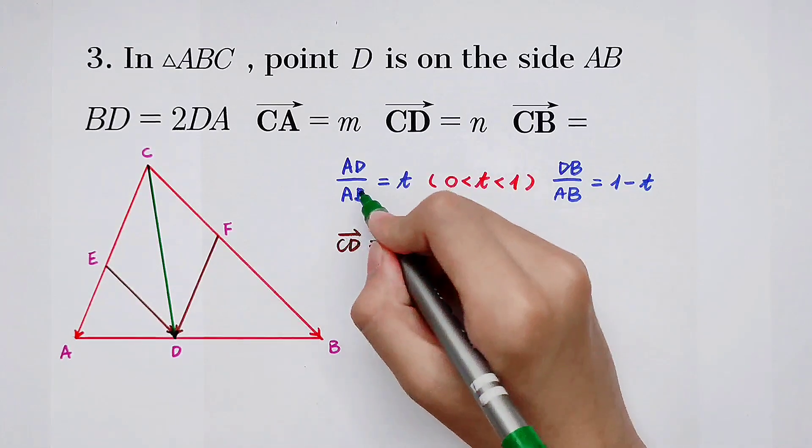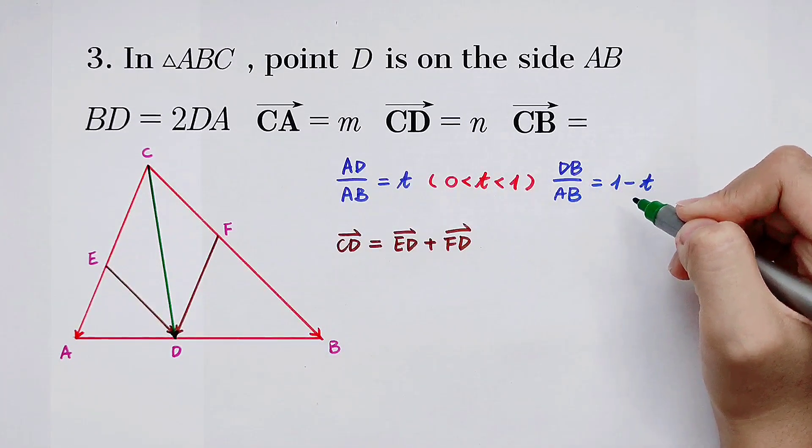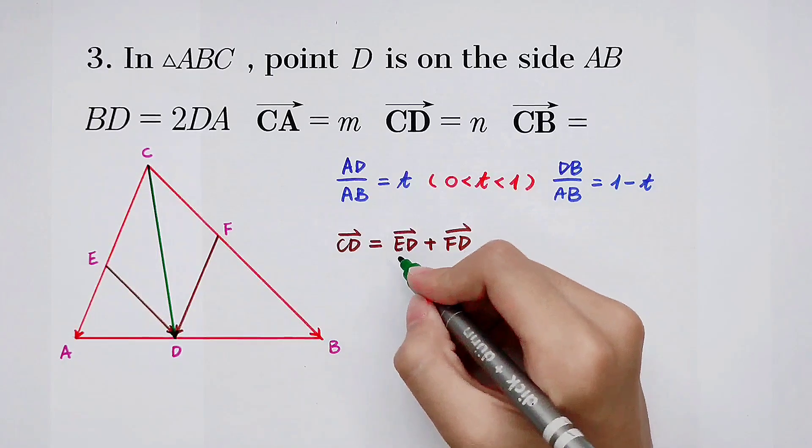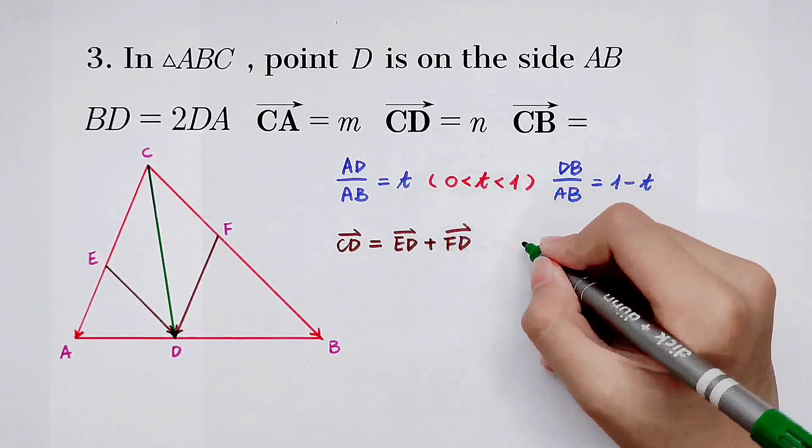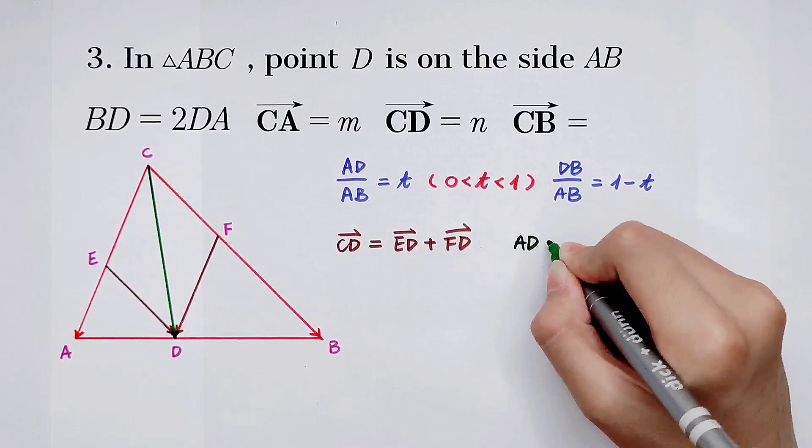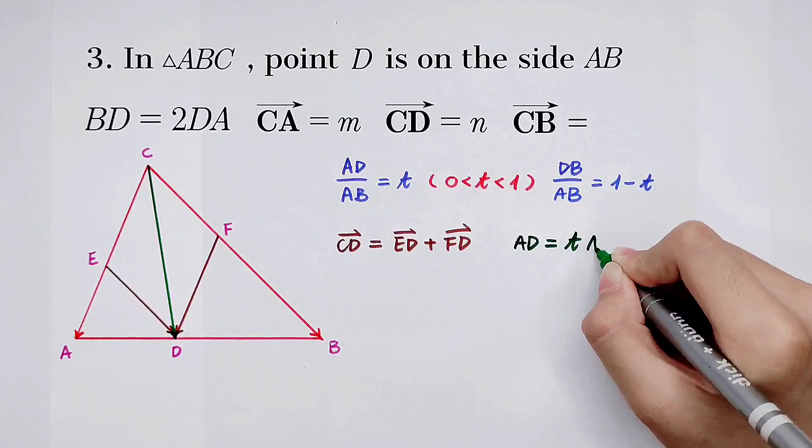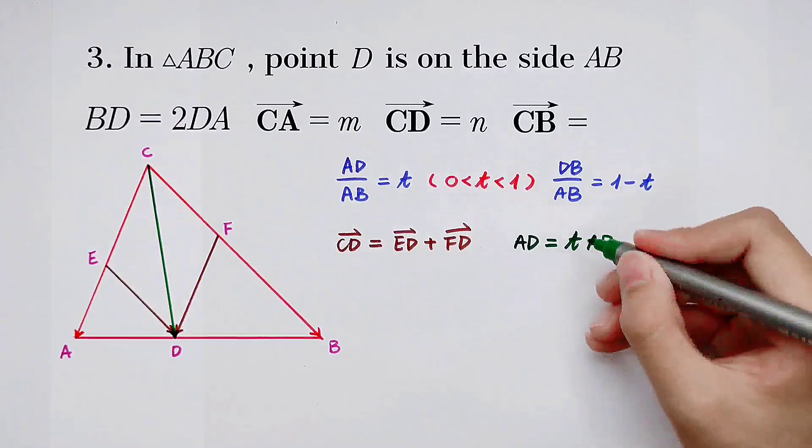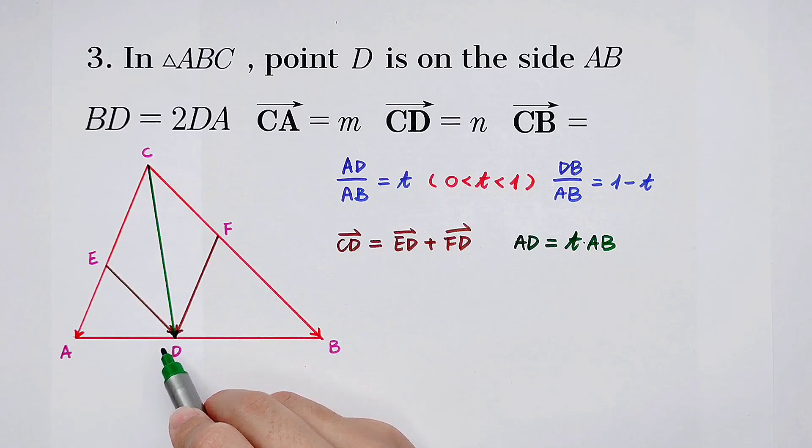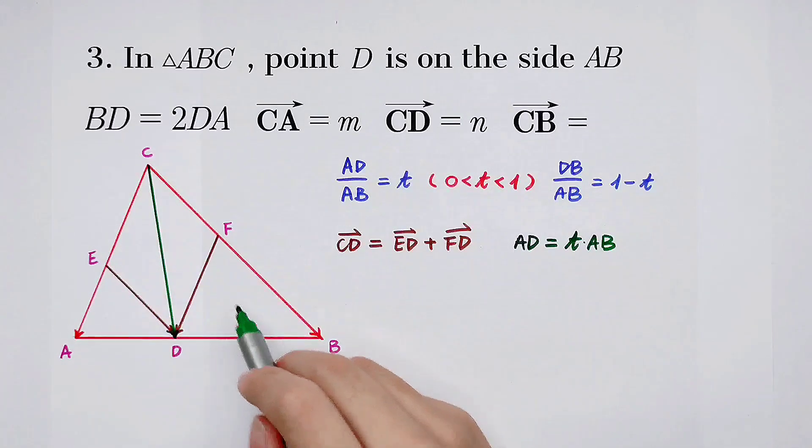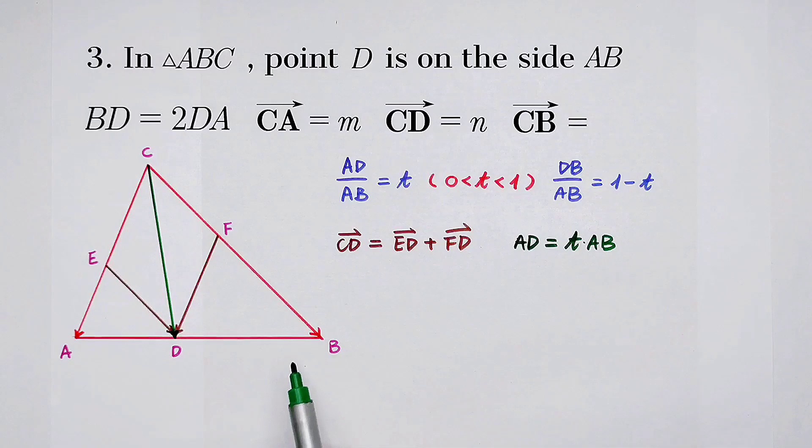But because AD divided by AB is T, and DB divided by AB is 1 minus T, so what's the value of the vector ED? From this, AD is T times AB. Now we pay attention to the triangle ADE and the triangle ABC. Because the line ED is parallel to the line CB, so these two triangles are similar.